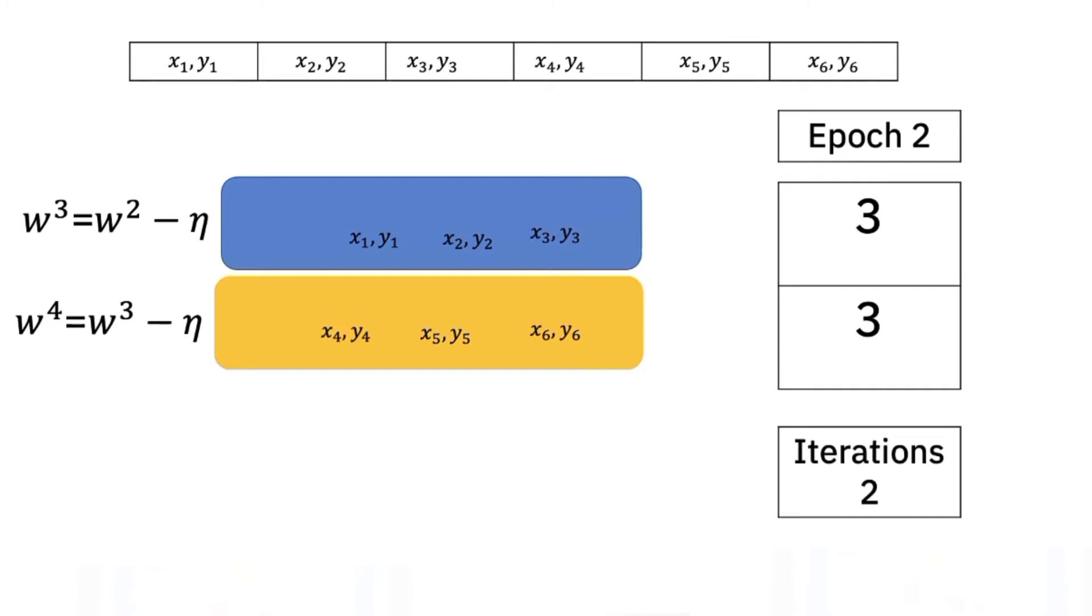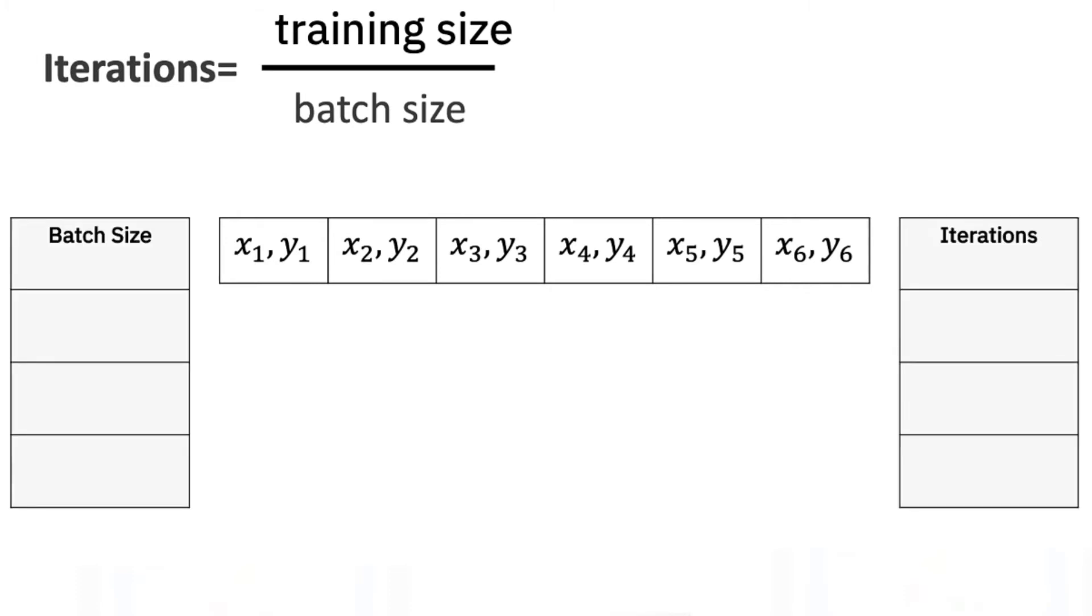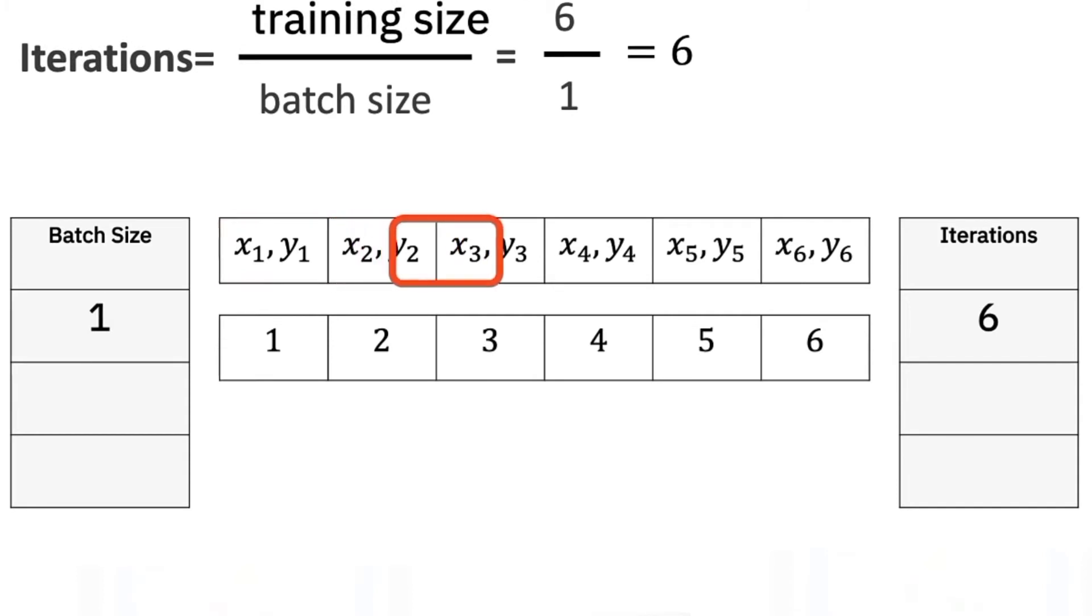Let's see how we can determine the number of iterations for different batch sizes and epochs. To obtain the number of iterations we simply divide the number of training examples by the batch size. Let's verify that. For a batch size of one we get six iterations.